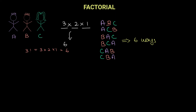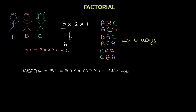Let's take another example. Let's say now we have five different people A, B, C, D, E. Rather than calculating all possibilities and writing them all down, why can't we just simply say A, B, C, D, E can be arranged in five factorial ways, which is five into four into three into two into one, which gives you 120 ways of arranging five objects or five different people.